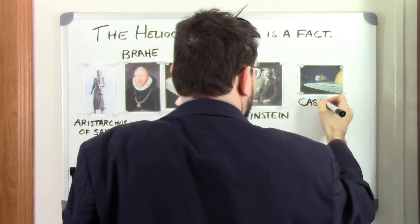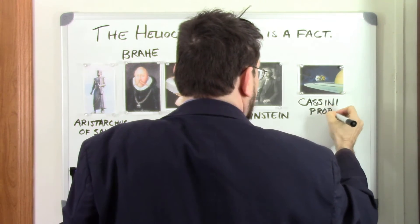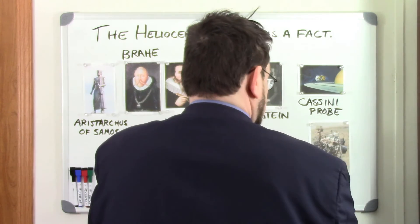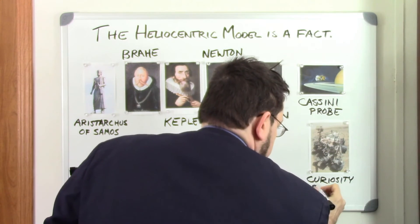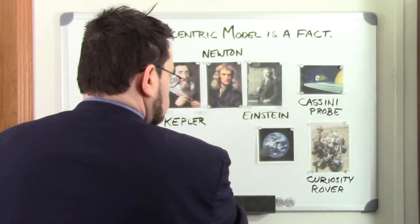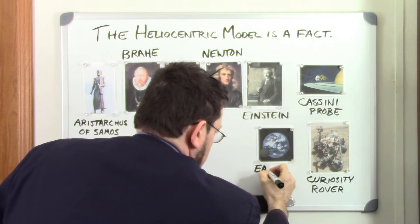Then came the invention of radar and rocketry and lasers and atomic clocks. Today we have the ability to put scientific instruments in space, and look up close at the planets, and look back at the earth measuring positions, distances, and times with astonishing precision.